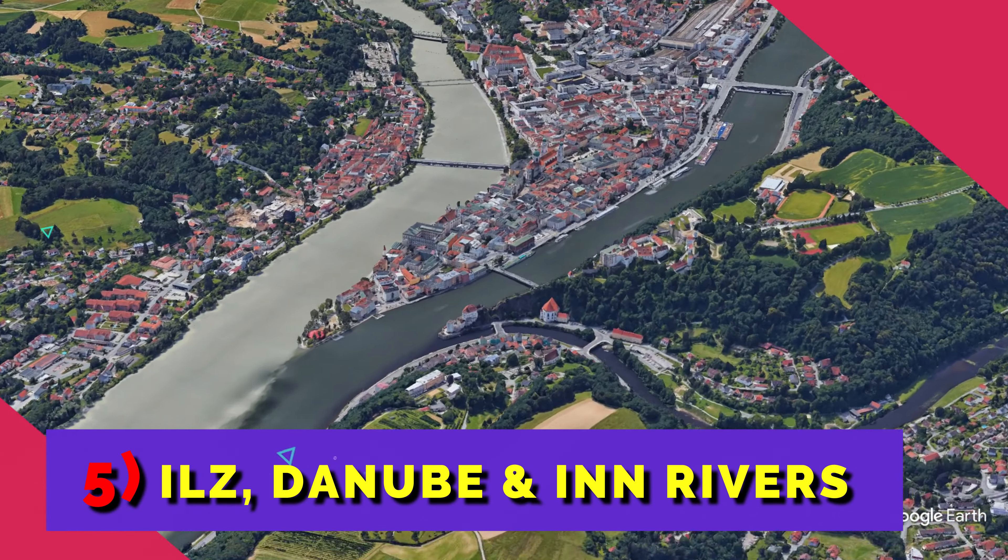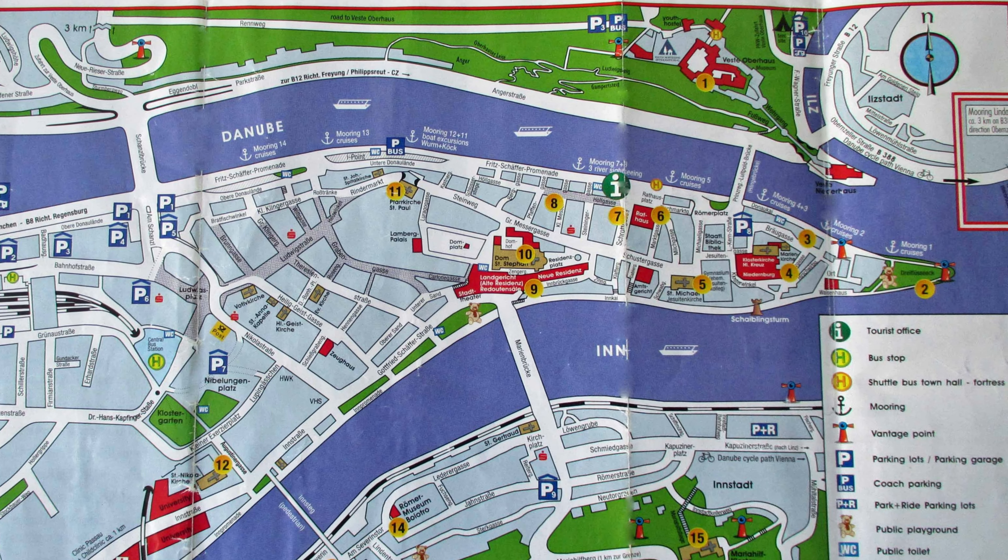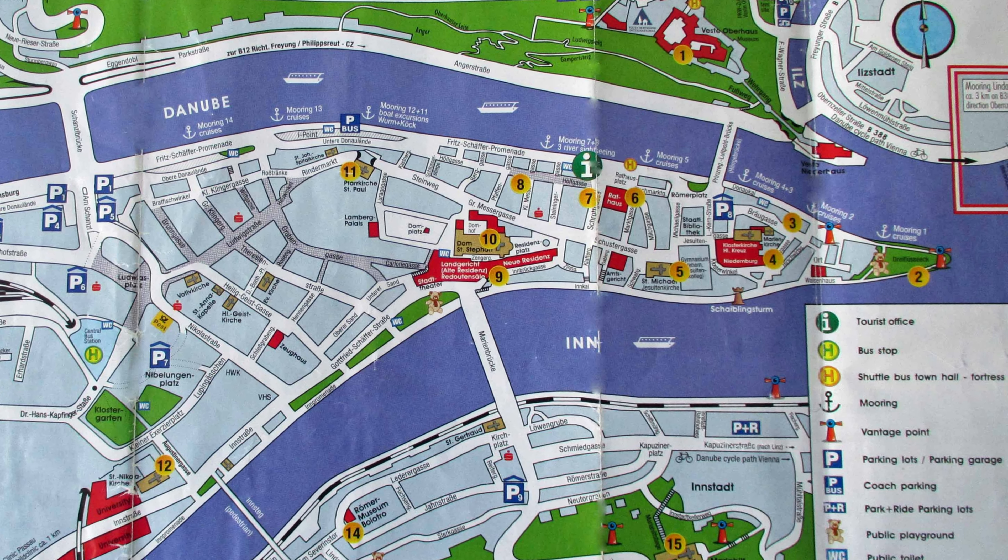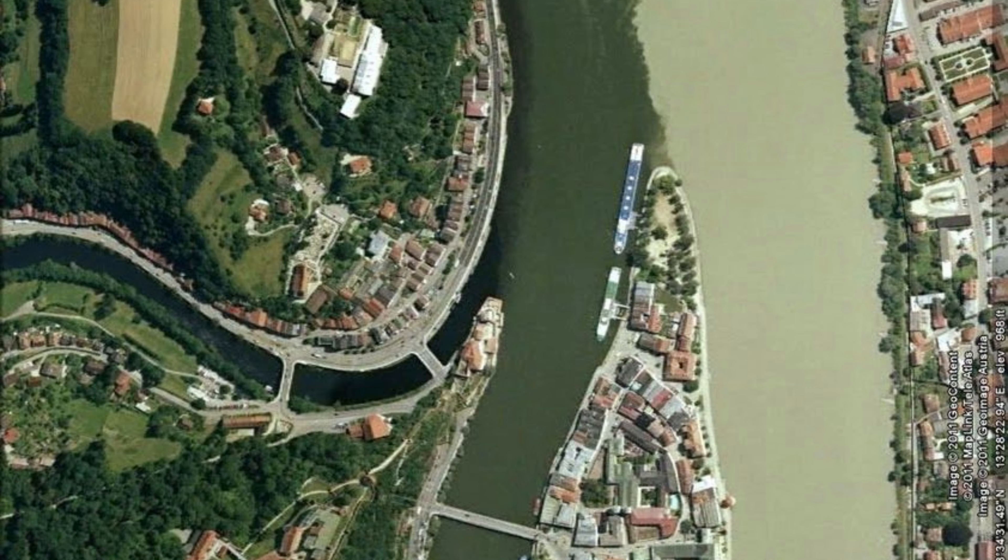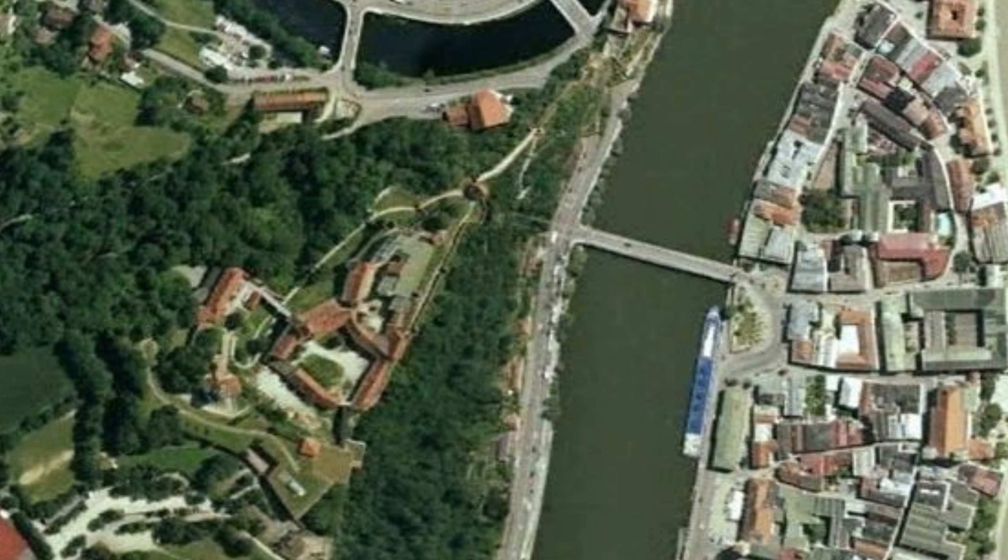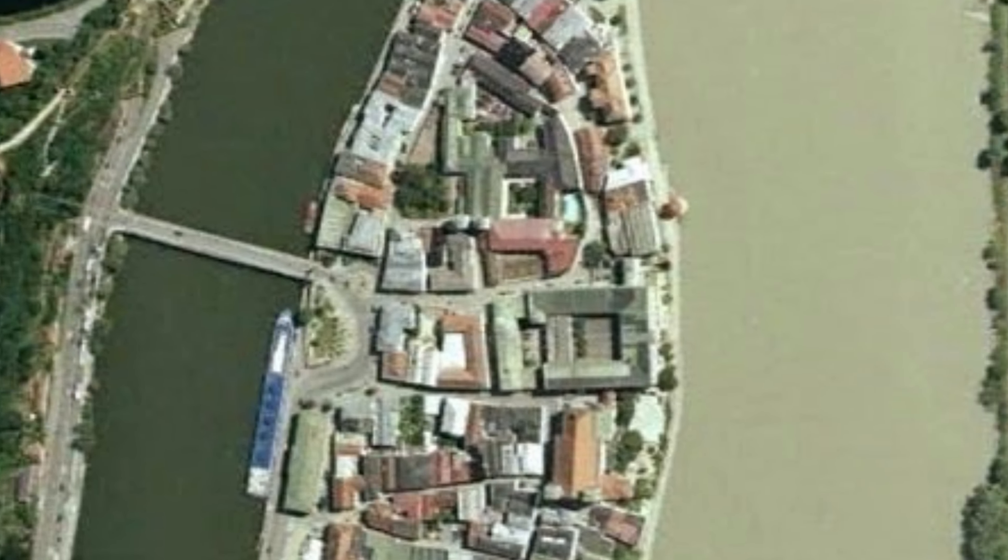Number five: Ilz, Danube and Inn. The junction of these rivers is in Passau, Germany. Ilz is a small mountain river to the left. The Danube is in the middle and Inn is the light river to the right.